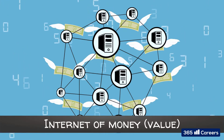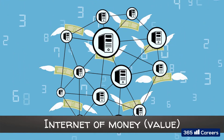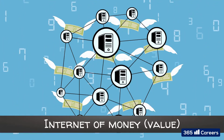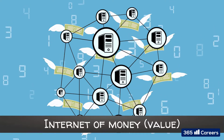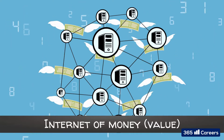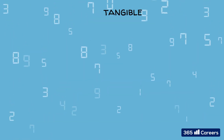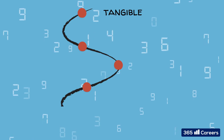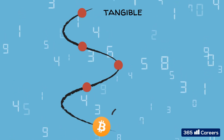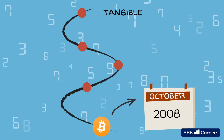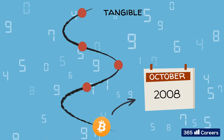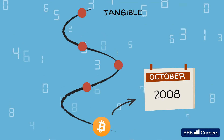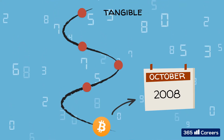Blockchain technology is commonly referred to as the internet of money or value. But let's take this journey step by step. We would like to start by giving you a short account of the chain of events that led to the emergence of Bitcoin, the first globally recognized application of blockchain technology.